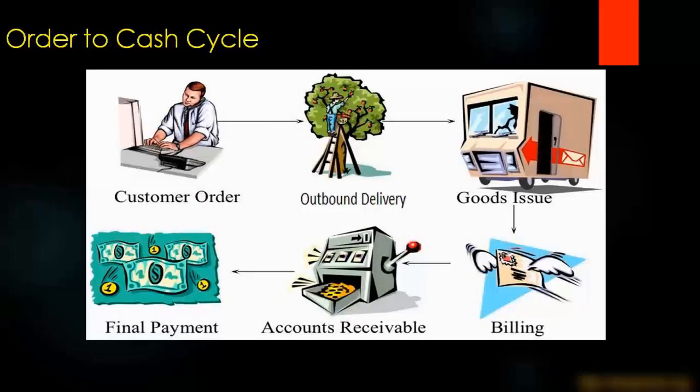In the previous section we talked about the order-to-cash cycle, where we saw that starting from the sales order it will go to the next step for shipping, goods issue, and billing. In this topic we are going to focus on the sales order only, and then we will move on to the other steps in the next video.